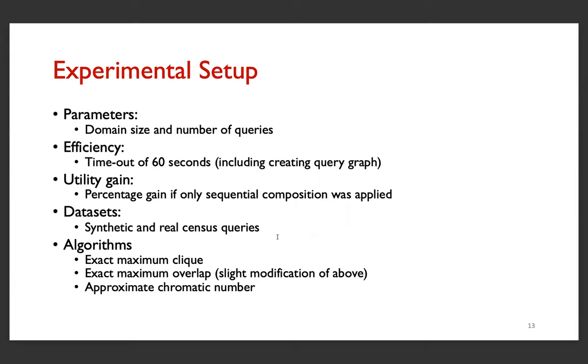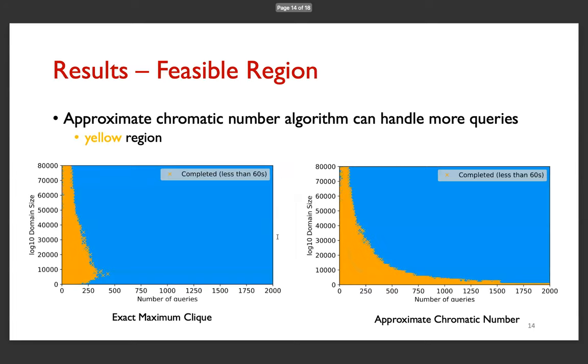The algorithms are exact maximum clique, exact maximum overlap, and the approximate chromatic number. The first of our results shows the feasibility of the algorithms in terms of the increasing domain size on the y-axis and the increasing number of queries. The yellow regions show those queries that were answered within the timeout of 60 seconds. And we can see that the approximate chromatic number can handle more queries than the maximum clique.